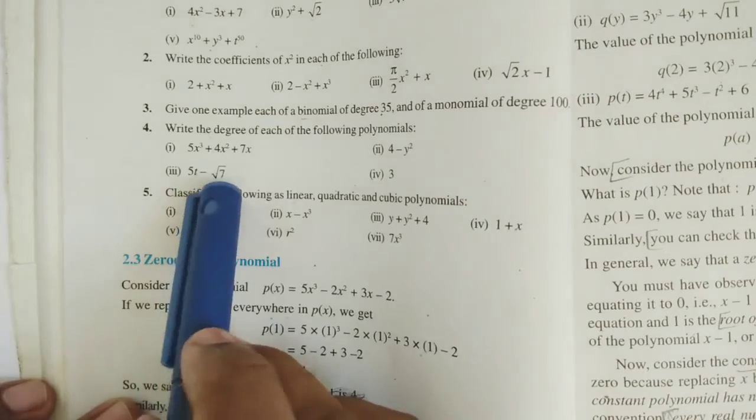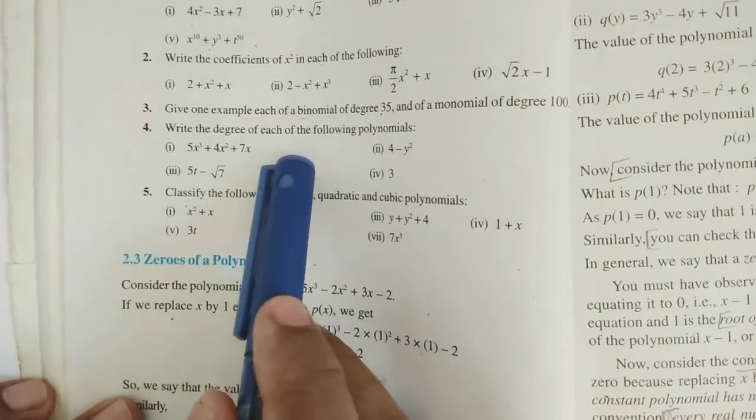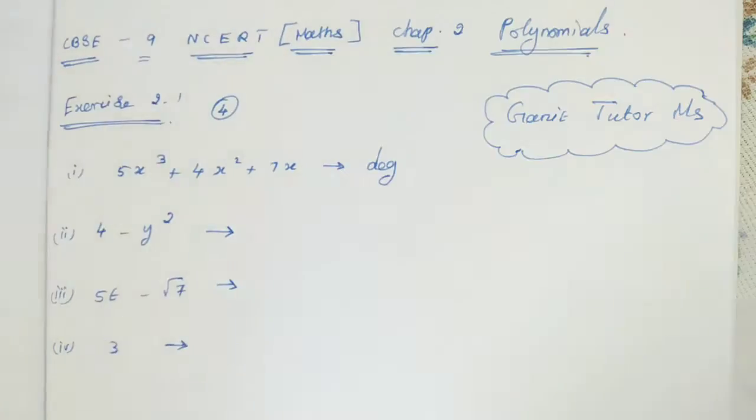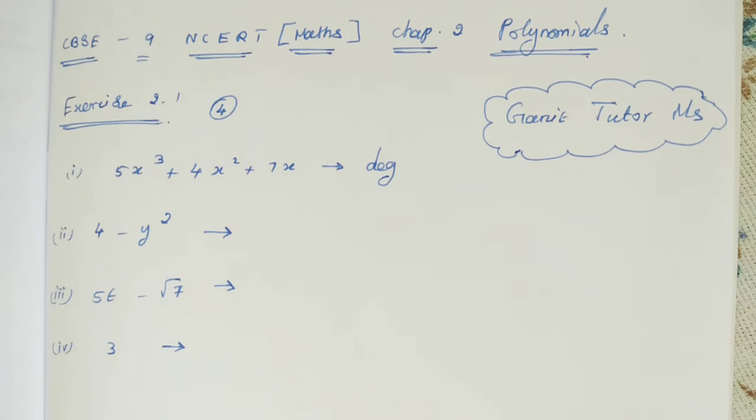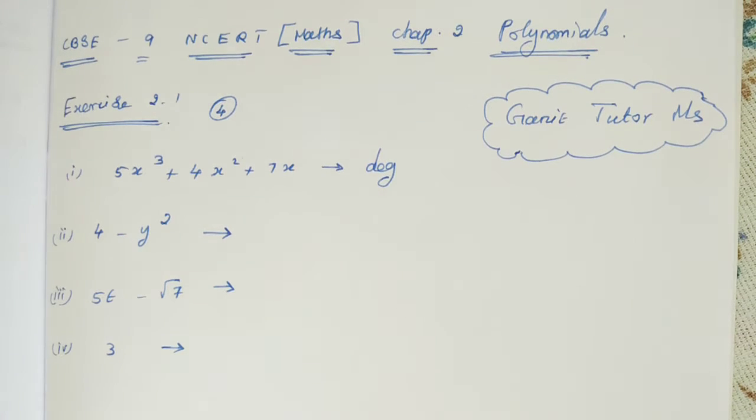So here they given a few polynomials. Now we can find the degree of a polynomial. We all know about the degree. What is the degree? The highest power in the polynomial is called the degree.